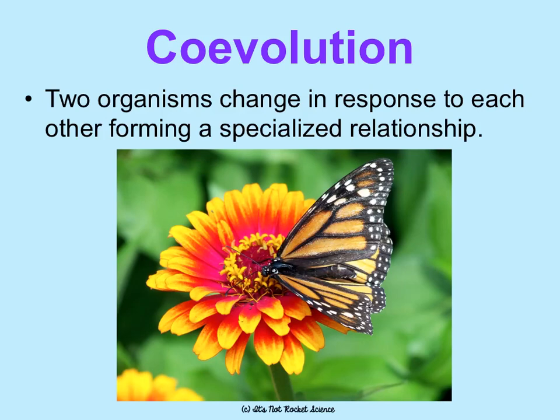Last but not least, the final pattern is coevolution. Remember, the prefix 'co' means together. These are when two organisms evolve together — they change in response to one another and form a specialized relationship. Many insects and flowers have evolved together because they work so closely together. A lot of predator and prey evolve together too. We're going to watch a really cool video and do some lab stations about this, but it's really cool how animals have changed in response to each other over time.